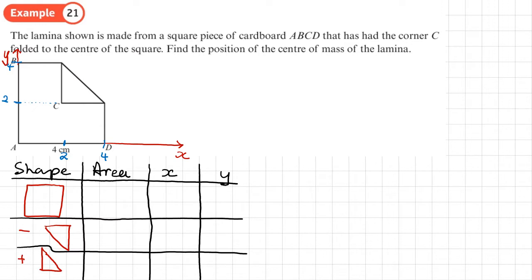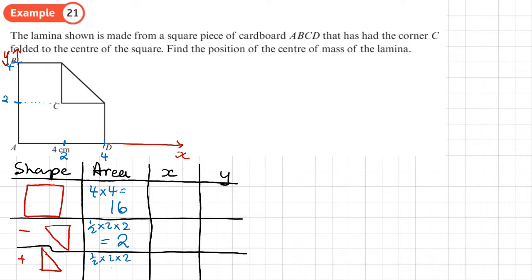As we've done previously with composite laminas, we put our information in a table. We have the square, from which we remove the corner triangle, and then add on the folded-over triangle. The square has area 4 × 4 = 16. The triangle has area ½ × 2 × 2 = 2. The folded-over piece is the same shape in a different position, so also area 2.